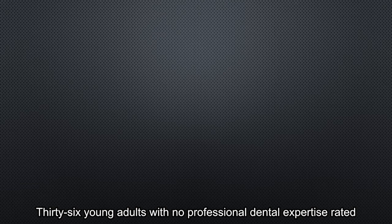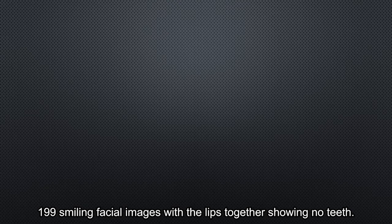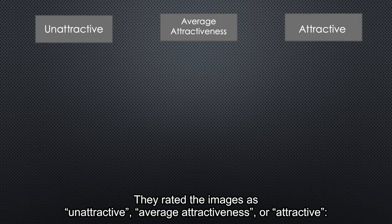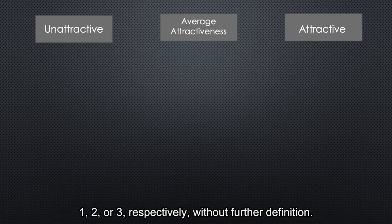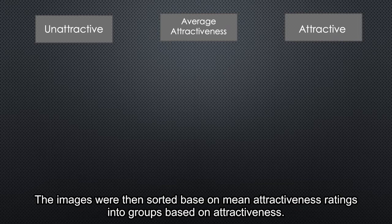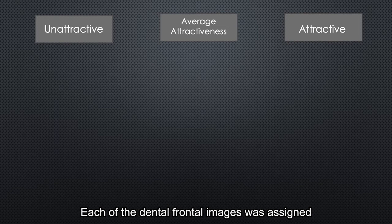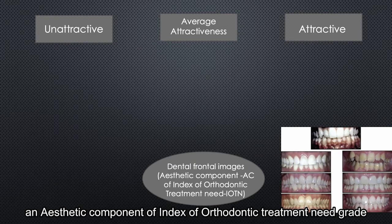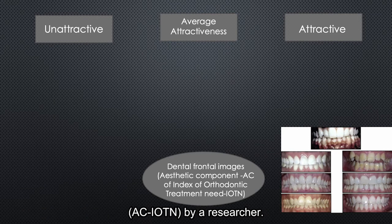Twenty-six young adults with no professional dental expertise rated 199 smiling facial images with lips together. They rated the images as unattractive, average attractiveness, or attractive — 1, 2, or 3, respectively — with their further definitions. The images were then sorted based on mean attractiveness rating into groups based on attractiveness. Each of the dental images was assigned an aesthetic component of the Index of Orthodontic Treatment Need (IOTN) by a researcher.